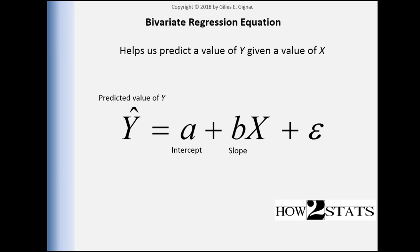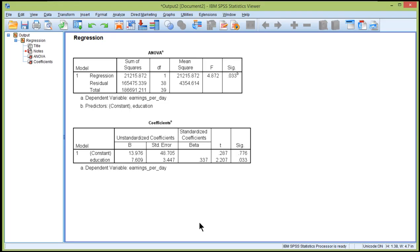I say increase because the unstandardized slope was positive in direction. Had it been negative—imagine that more education is related to lower earnings—this unstandardized slope would have been negative in value. But it's positive. The unstandardized slope is saying, with each unit increase in X, which is years of education, you can expect, on average, to earn an extra $7.61 per day.